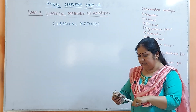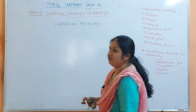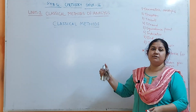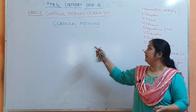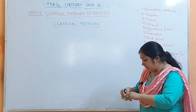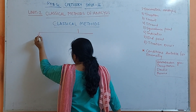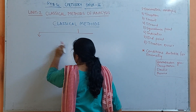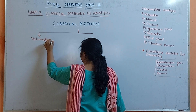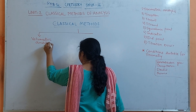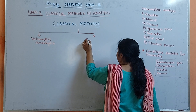Classical Methods depend on the completion of reaction. The reaction should occur completely — that is why they are Classical Methods. These Classical Methods are of two types: Volumetric Analysis and Gravimetric Analysis.